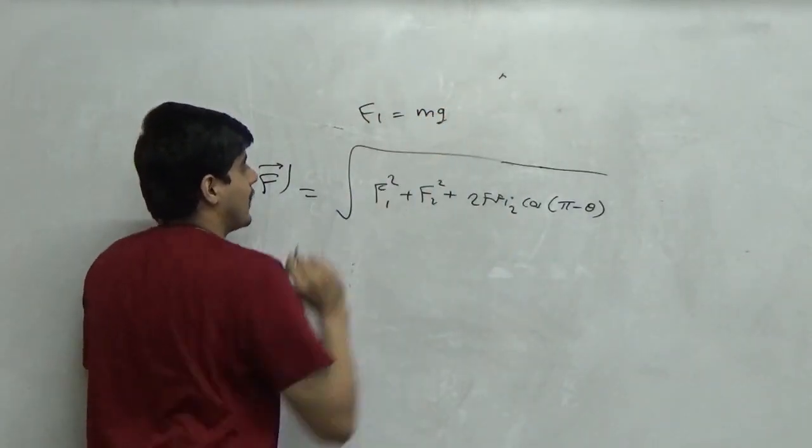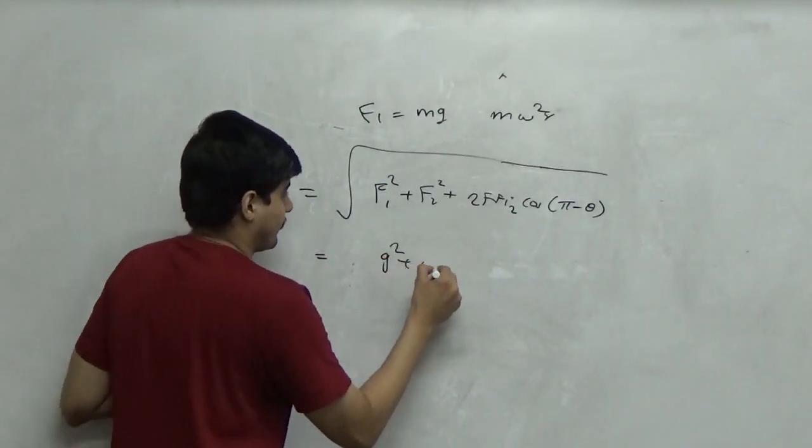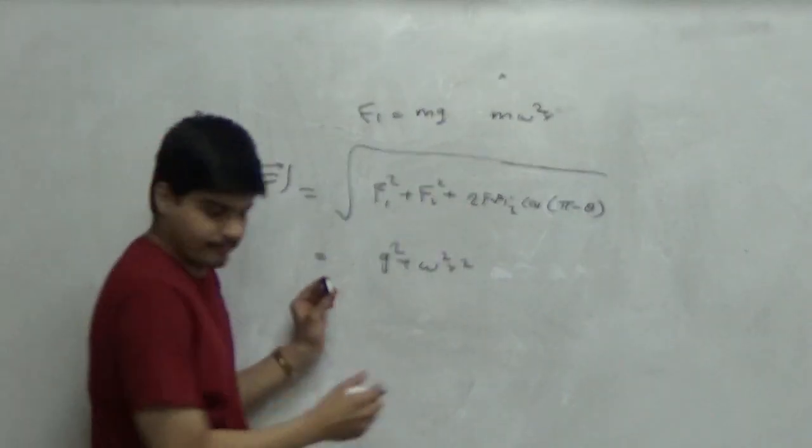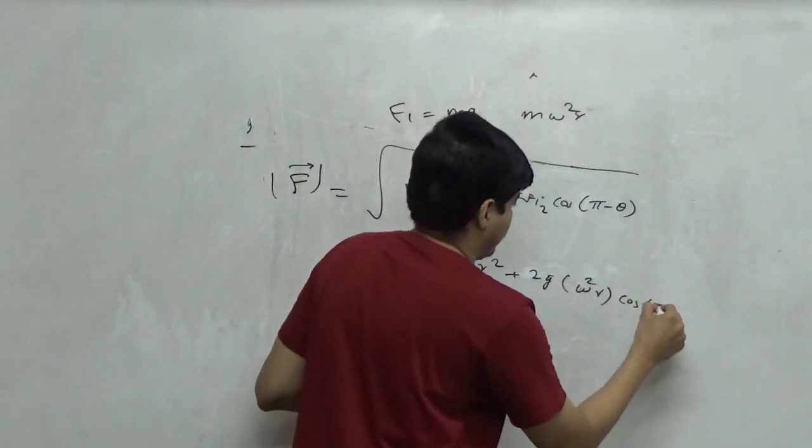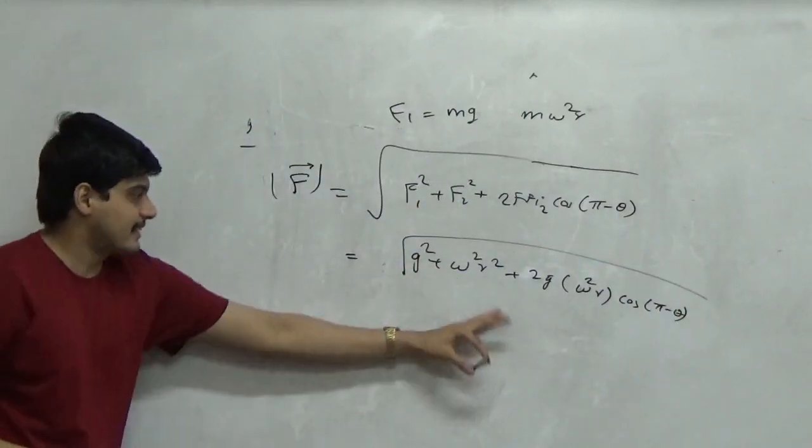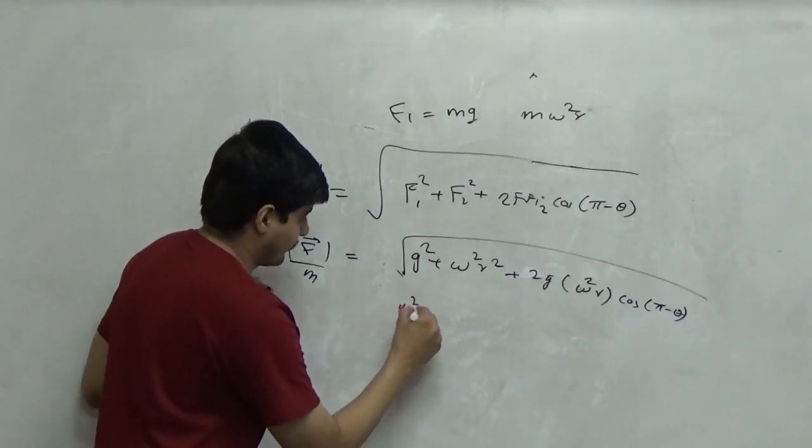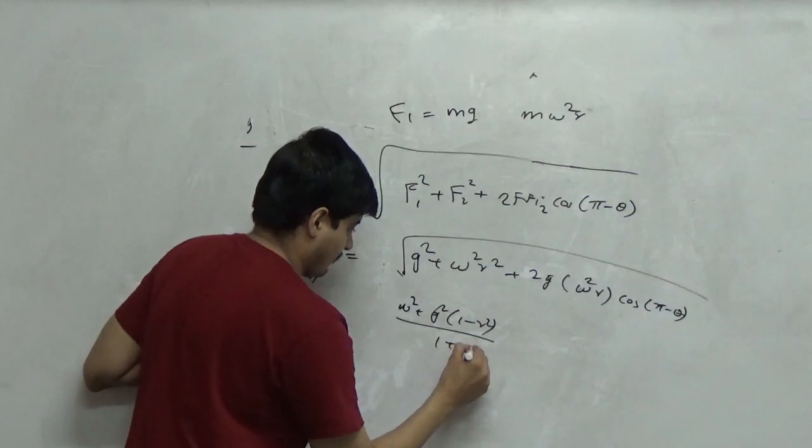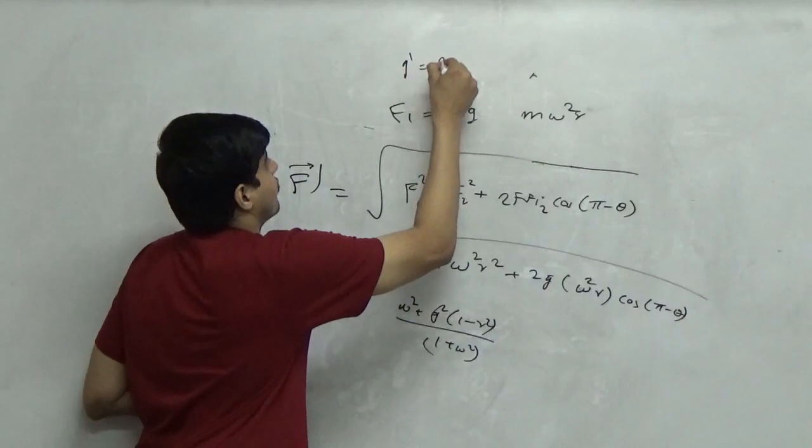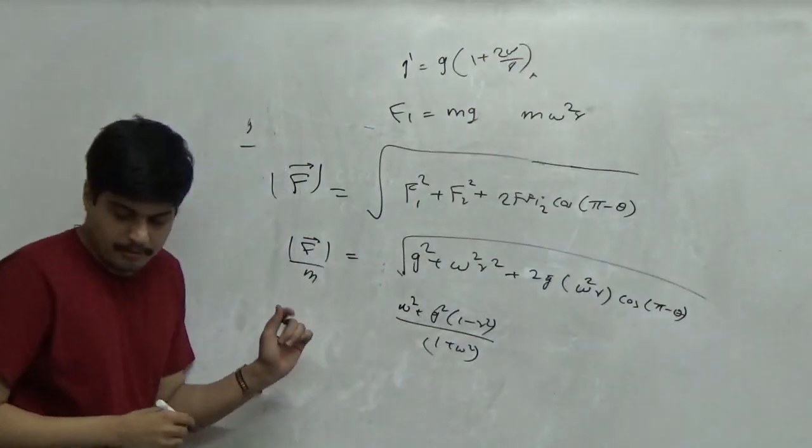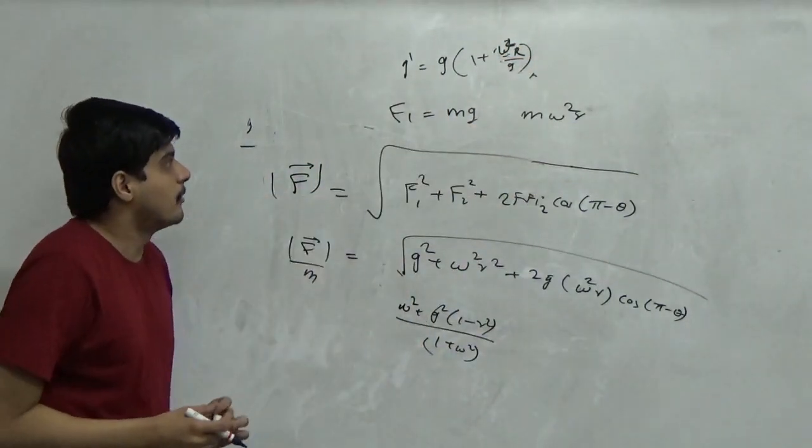F1 in magnitude is simply mg, and f2 is m omega square r. If these are the cases, I get simply this as the force expansion: mg square plus m square omega square r square plus 2g omega r cos of pi minus theta. This expression on further simplification has to come down to a point where I can substitute this back. This expression is simply the product of these two coming down together and giving me the final result as mg times 1 plus omega square r upon g.